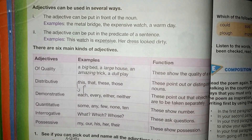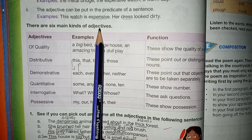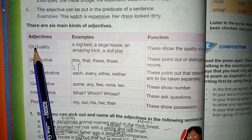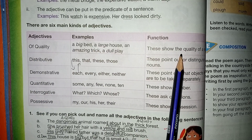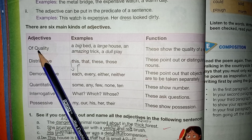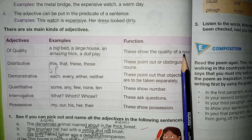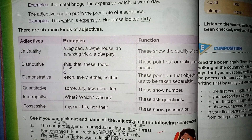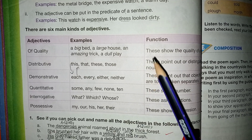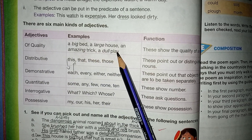اب یہاں adjectives کی details بتائی ہیں۔ There are six main kinds of adjectives - ان کے adjectives، examples اور functions بتائے ہیں۔ Number one: adjectives of quality - they show the quality of a noun، ان کا function کیا ہے کہ وہ کسی بھی noun کی quality کو explain کرتے ہیں۔ Examples: a big bird, a large house, an amazing trick, a dull play - ہم کسی بھی چیز کی quality بیان کر رہے ہیں۔